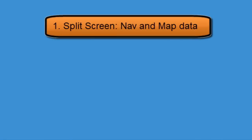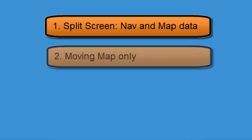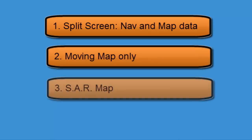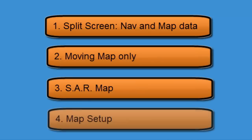There are four map chapters we'll be looking at: the split screen, showing nav and moving map data together; the moving map only; the SAR map; and a setup chapter.